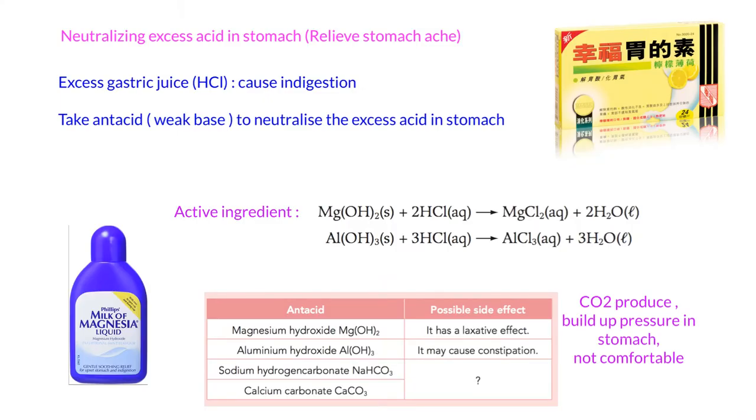Next: neutralizing excess acid in the stomach. The acid in our stomach, the gastric juice, is hydrochloric acid. If you have too much, it causes indigestion - you cannot digest well. We're going to add an antacid. Remember the spelling: it's antacid, not anti-acid. Antacids normally use weak bases to neutralize the excess acid in it.